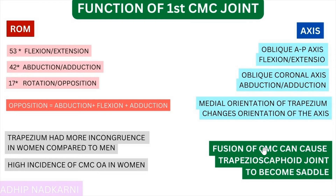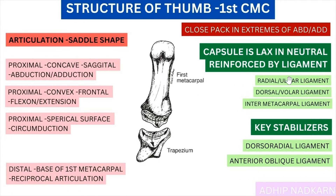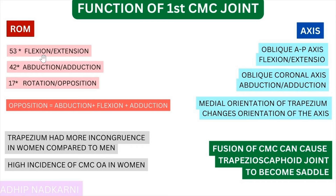To summarize: we started with the structure of the thumb CMC joint, looking at the articulating surface. Because the trapezium is slightly medially rotated, flexion/extension and abduction/adduction change roles. We saw how ligaments reinforce the capsule — the main ones being the dorsoradial ligament and anterior oblique ligament. Under function, we covered flexion/extension, abduction/adduction, and rotation or opposition, with the axes slightly tilted due to trapezium orientation. Finally, we saw how the body adapts when the CMC joint is fused in cases of OA. That's all for today — thank you for watching.